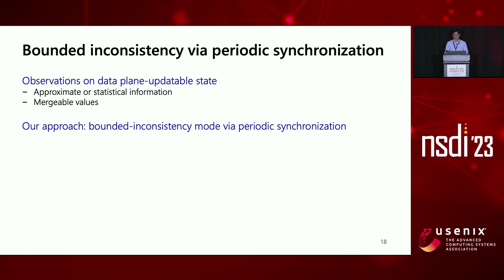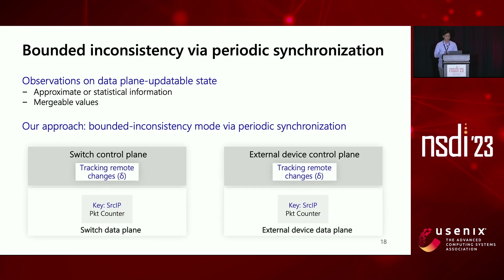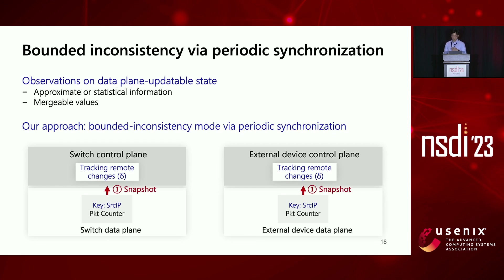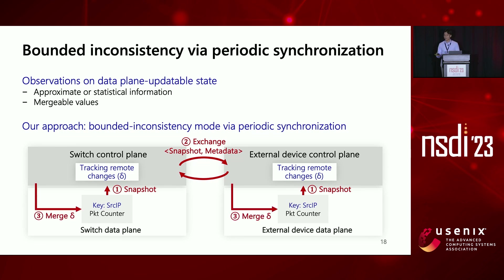Here's how it works at a high level. At every synchronization interval, the control plane of each device takes a snapshot of the stateful object and exchanges it with the other. It then computes the changes made on the other side — called delta — and merges it with the current value in the data plane, since the data plane supports atomic update and merge.